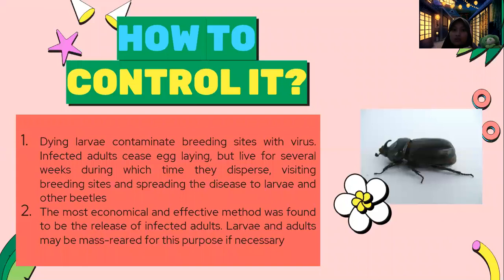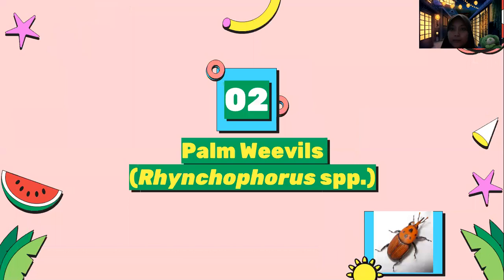How to control the rhinoceros beetle? First, dying larvae contaminate breeding sites with virus. Infected adults cease egg laying but live for several weeks, during which time they continue visiting breeding sites and spreading the disease to larvae and other beetles. Second, the most economical and effective method was found to be the release of infected adults. Larvae and adults may be mass-reared for this purpose if necessary.